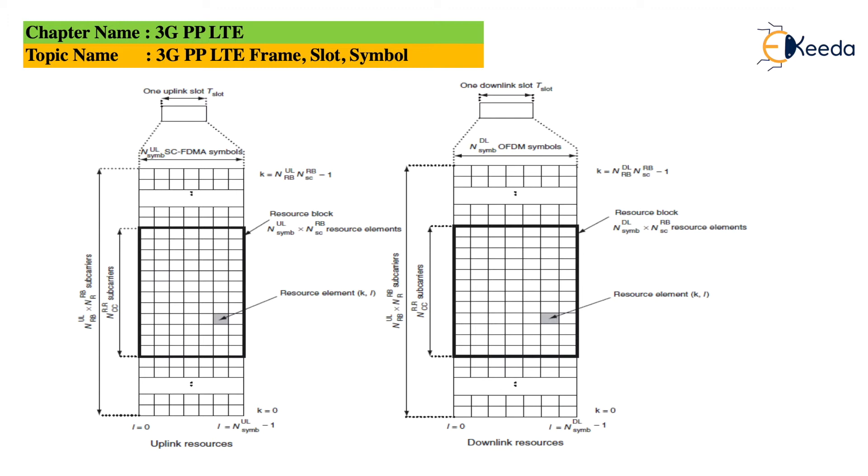The darker block that we can see is called the resource block, and the individual element of the resource block represents a resource element. This resource element is marked in grey color. This resource element is indicating one symbol that has been transmitted using one single subcarrier.